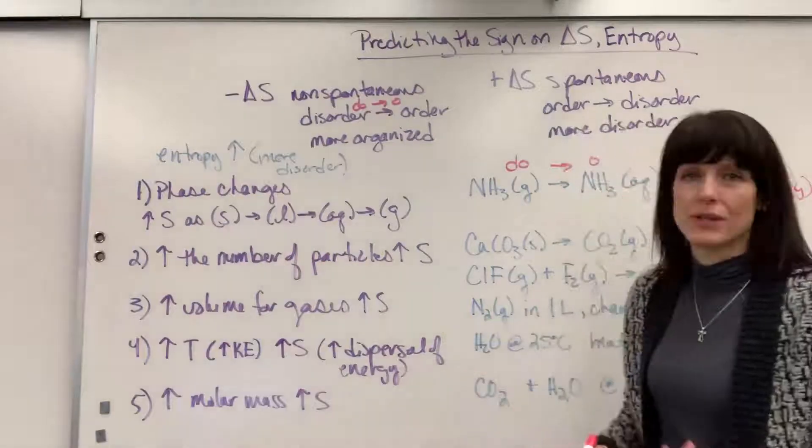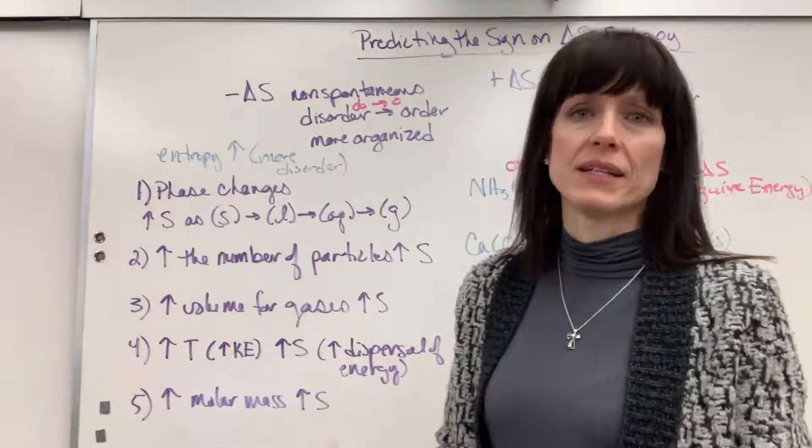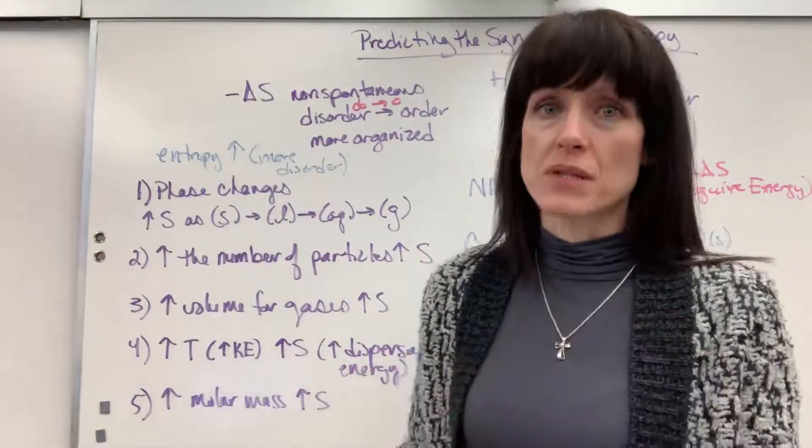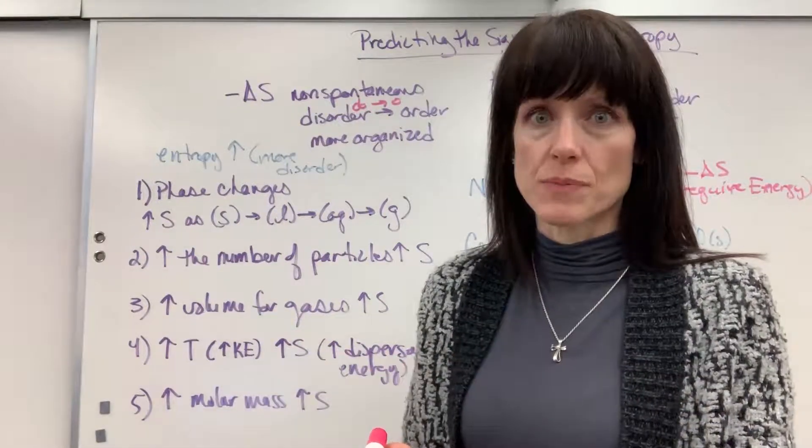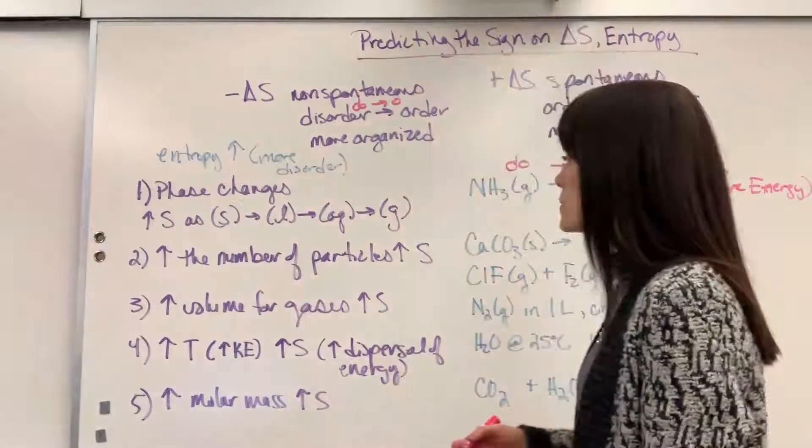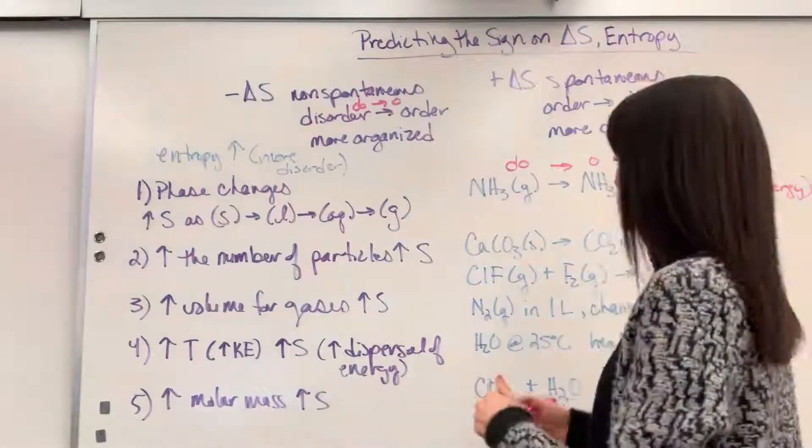Okay, let's look at our second example. Anytime you increase the number of particles, you increase entropy. And it goes back to that idea, the more particles you have that can collide, the more options of how energy can disperse. And the more options for energy to disperse, the greater the entropy, the greater the disorder.